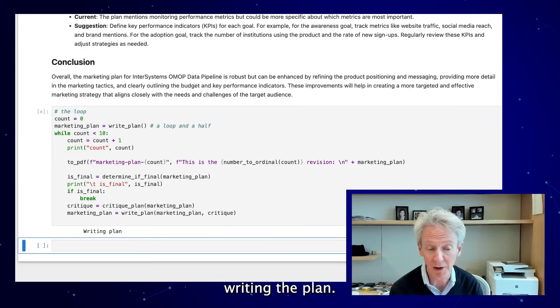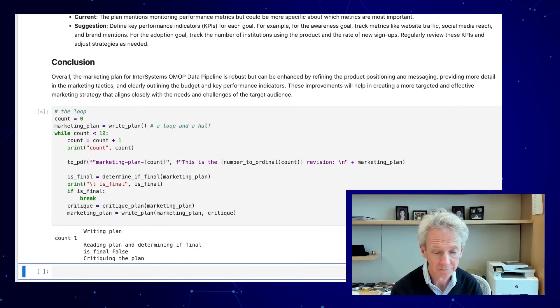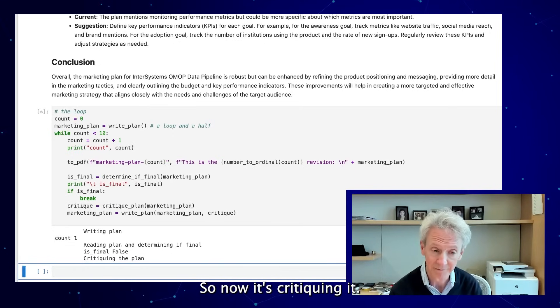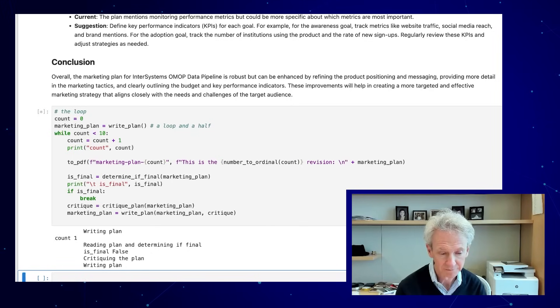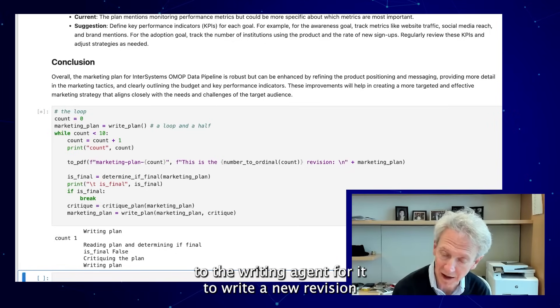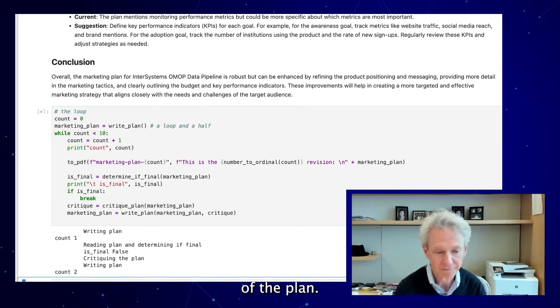You can see here it's writing the plan, reading it to determine if it's final. Now it did not find it to be the final version, so now it's critiquing it. Now it's sending that critique along with the prior version of the plan to the writing agent for it to write a new revision of the plan. So we have a second revision now.